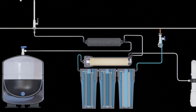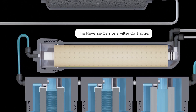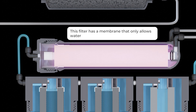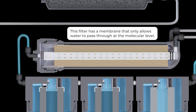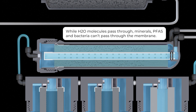The filter across the top is the most important one — the reverse osmosis filter cartridge. This one has a membrane that only allows water to pass through at the molecular level. While H₂O molecules pass through, minerals, toxic impurities called PFAS, and bacteria can't pass through the membrane.